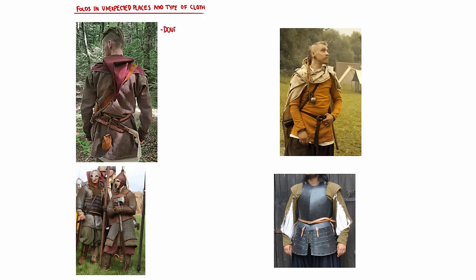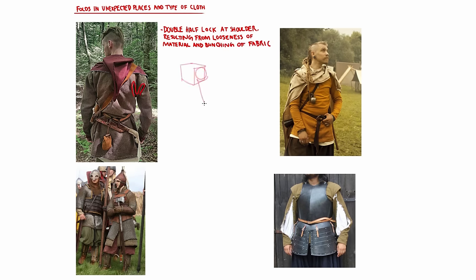Sometimes these folds occur in areas that you wouldn't necessarily expect, and often they combine with one another. In this top left image you can see a double half-lock fold occurring at each armpit — because the material is much looser, it creates larger and more plentiful folds. The half-lock folds in the second photo on the right are much smaller due to less abundant material.